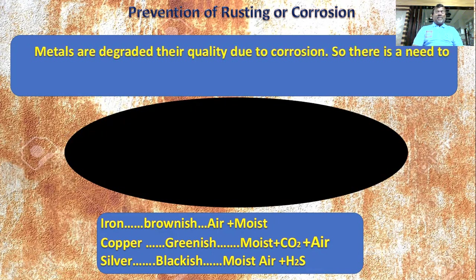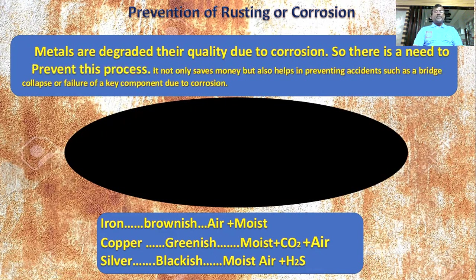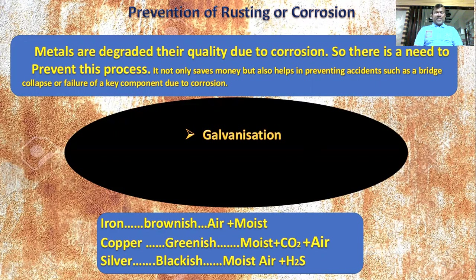Metals are degraded in quality due to corrosion, so there is a need to prevent this process — it saves money and also helps prevent accidents or heavy damage such as bridge collapses or failure of key machinery components. There are several methods: galvanization, oil coating, electroplating, and alloying.